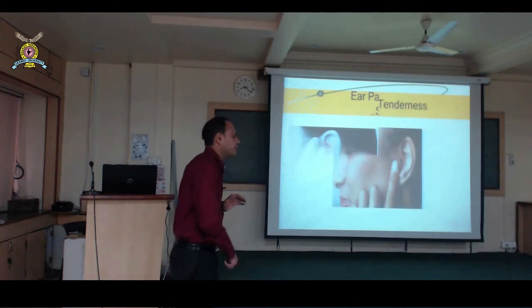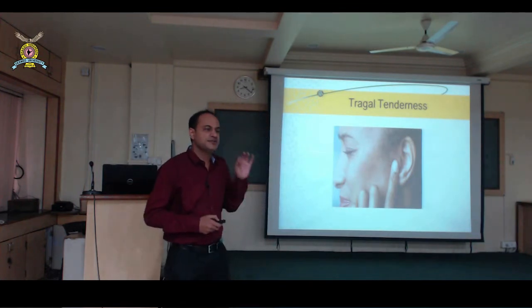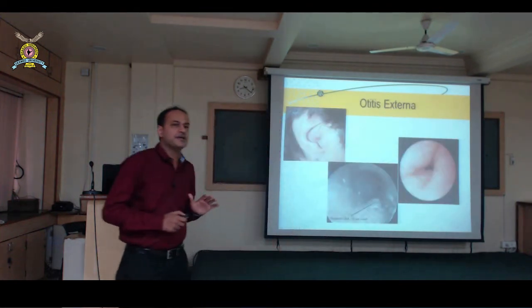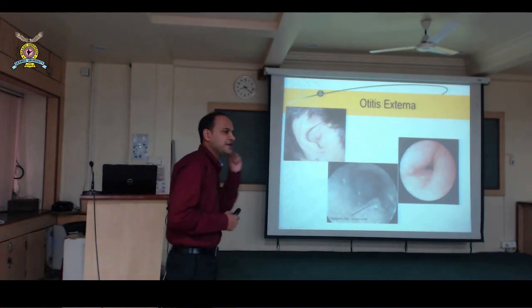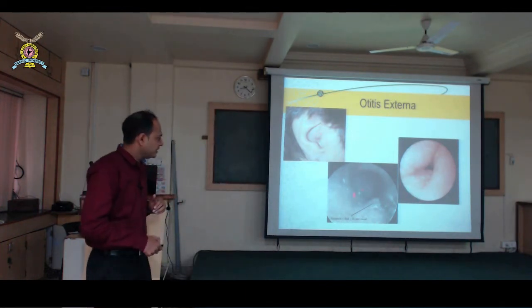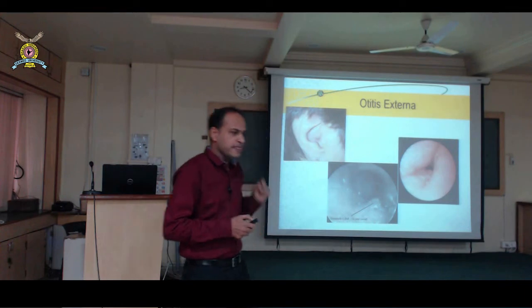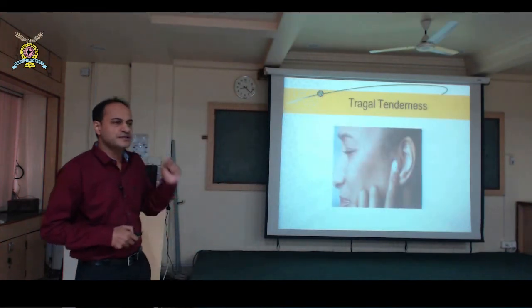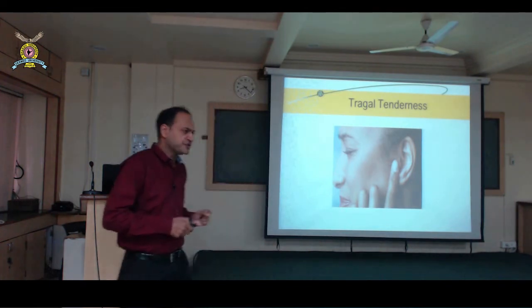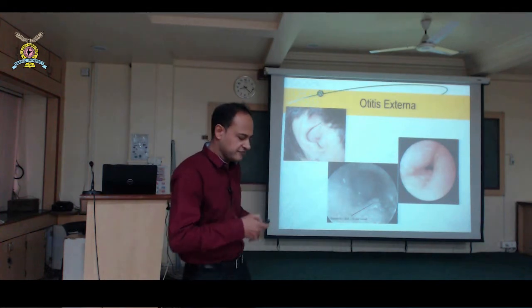The first thing to do when a patient with severe ear pain comes is to check for tragal tenderness — press the tragus with a finger. If the patient has severe pain on touching the pinna or pressing the tragus, you are dealing with otitis externa. It can be a simple boil in the ear canal or an extensive boil that completely narrows the ear canal.